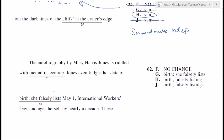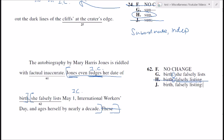Question 62: 'Jones even fudges her date of birth; she falsely lists May 1st, International Workers' Day, and ages herself by nearly a decade.' We have an option to place a colon in place of this punctuation. 'Jones even fudges her date of birth' — we have a subject, a verb, and a complete thought, so that is an independent clause. Note that 'she falsely lists May 1st, International Workers' Day, and ages herself by nearly a decade' could also stand alone. However, the semicolon answer changes 'she falsely lists' to 'falsely listing,' making it not a complete sentence — and quite frankly it's terribly clumsy.